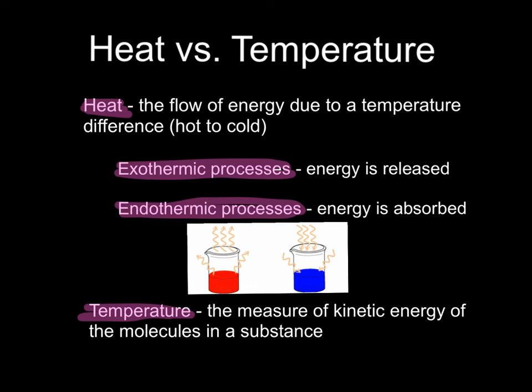Let's take a look at the diagram to make sure we understand exothermic versus endothermic processes. In the beaker with the red liquid — obviously red meaning hot — this is an exothermic process. The energy coming from the hot liquid is going outward; you can feel the heat coming out and the glass may get hot. When something is cold, it's taking the energy from its surroundings to try to warm up, and the glass will feel cold to you. That's heat.